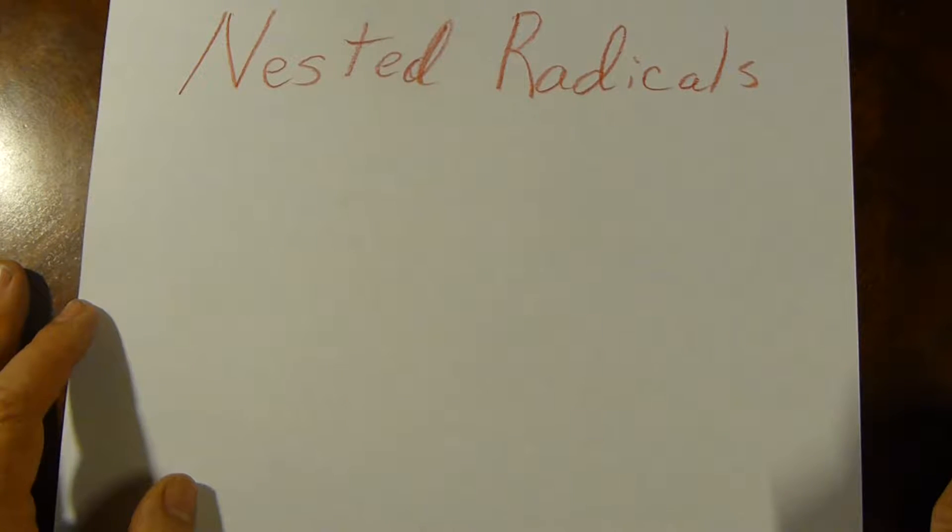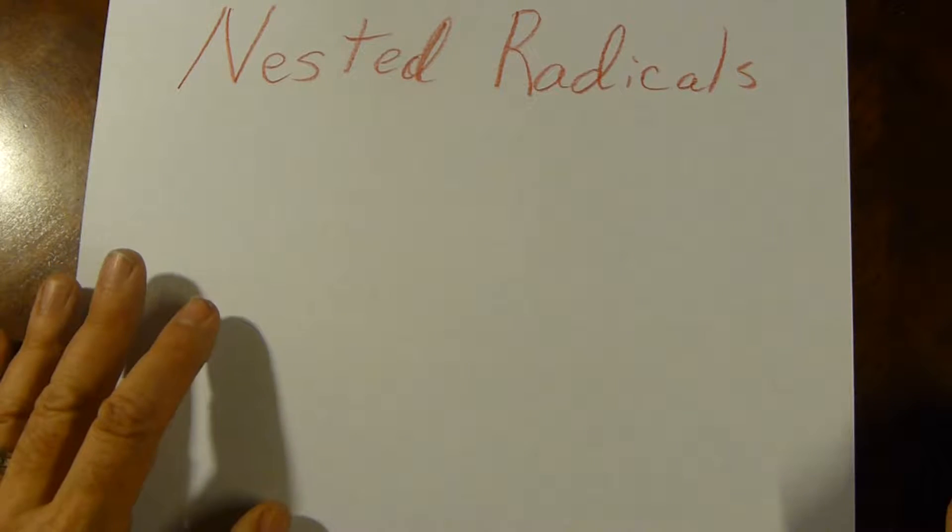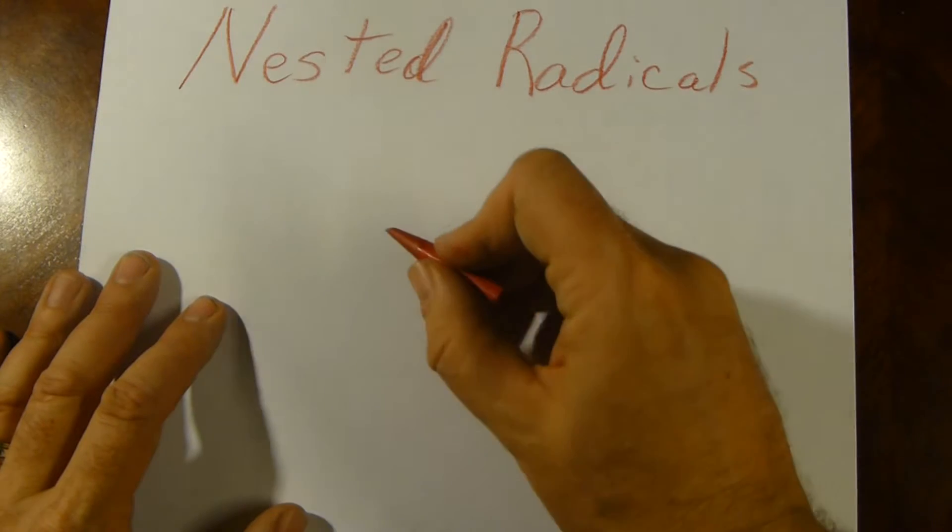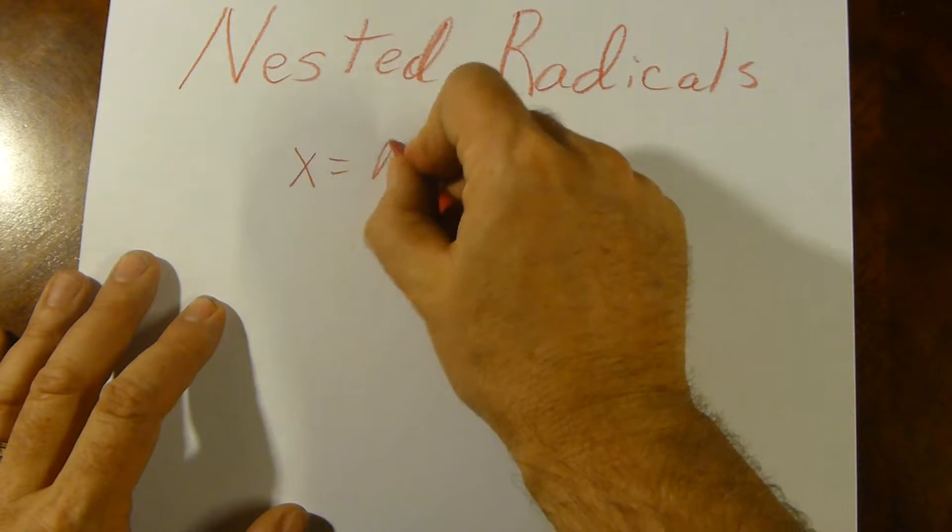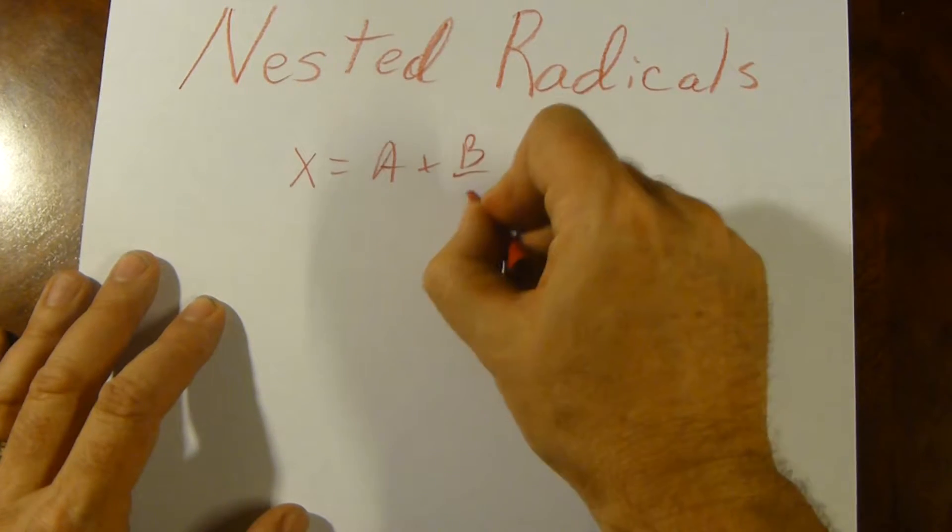In this video, we're going to take a look at nested radicals. In the previous video, we looked at nested forms of the form x equals a plus b over x.